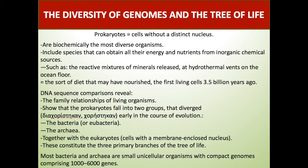DNA sequence comparison revealed the family relationships of living organisms, showing that the prokaryotes fall into two groups that diverge early in the course of evolution: the bacteria (or Eubacteria) and the archaea, together with eukaryotes, which share a membrane-enclosed nucleus. This constitutes the three primary branches of the Tree of Life.